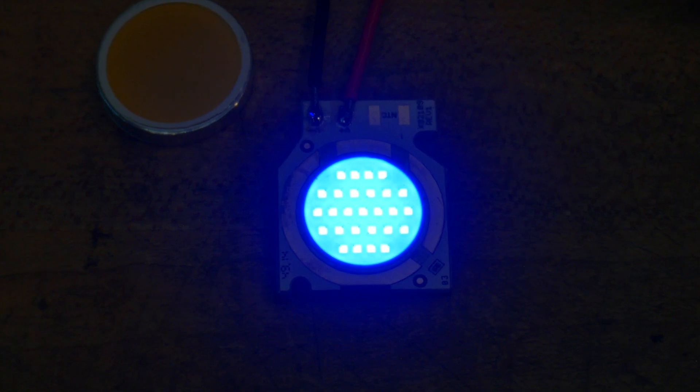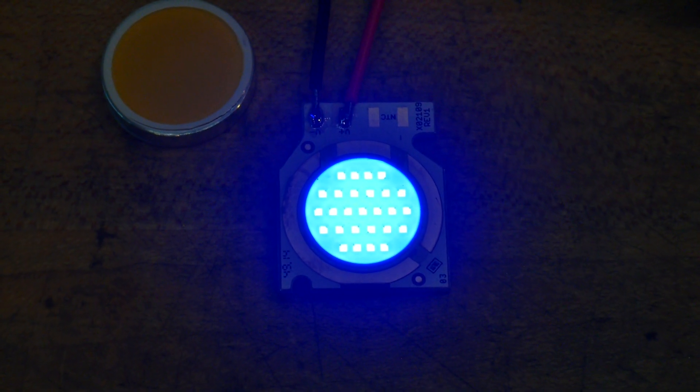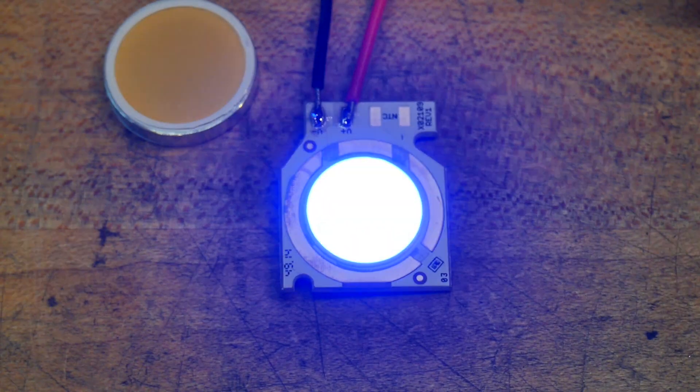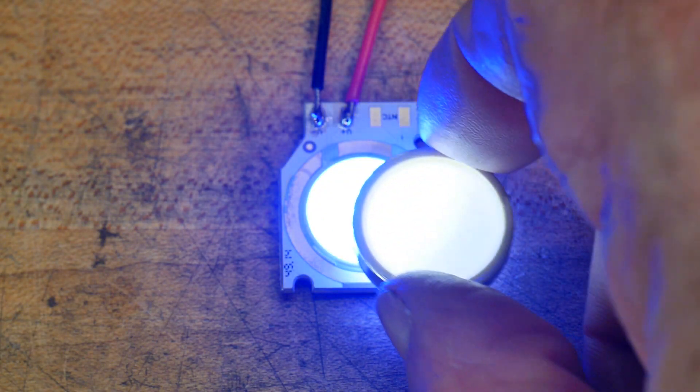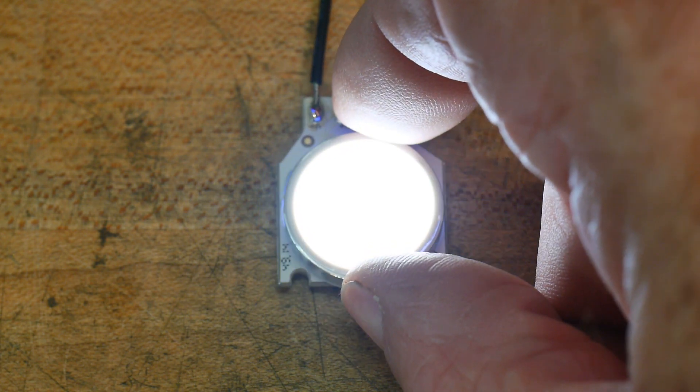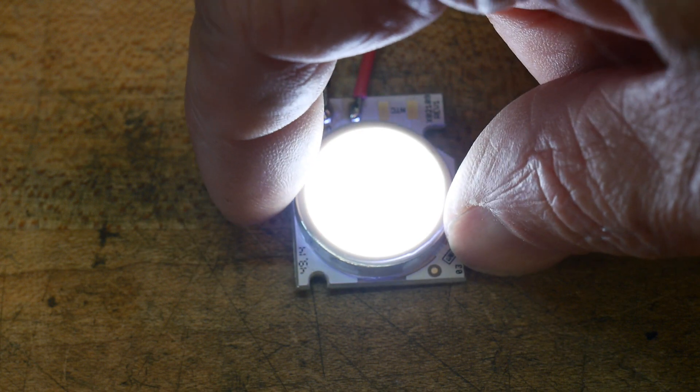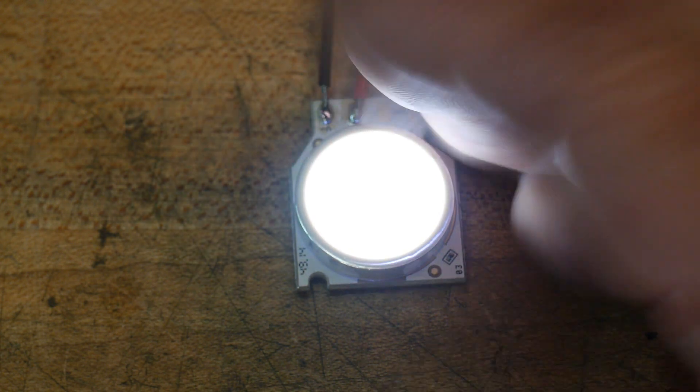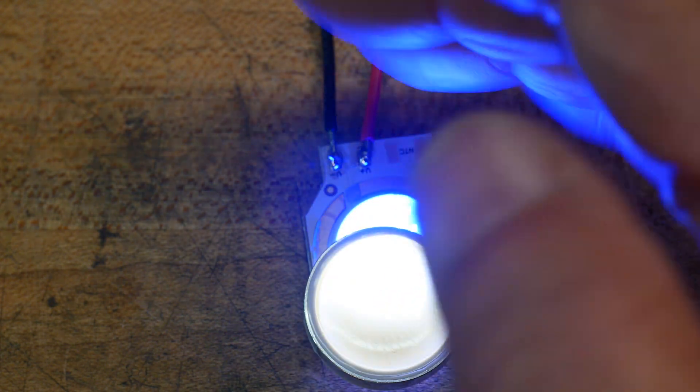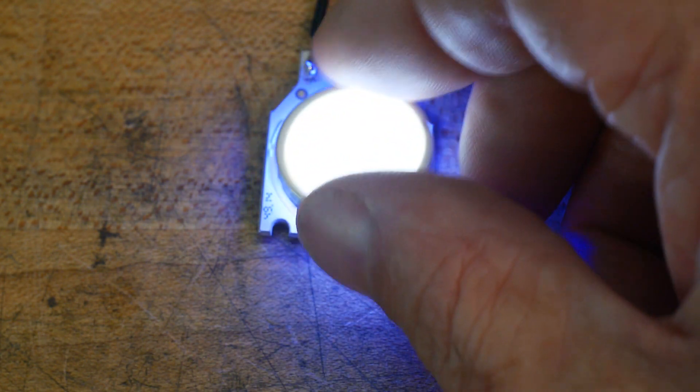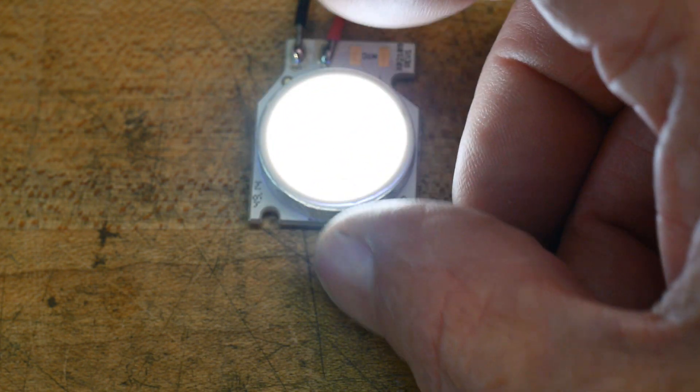So let's go ahead and go back. We'll put the phosphor over it. And now we have white light. So before we had blue light. And now we have white light.